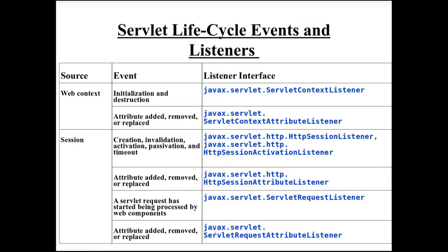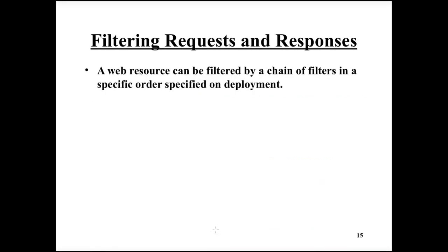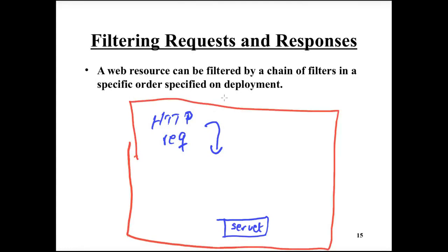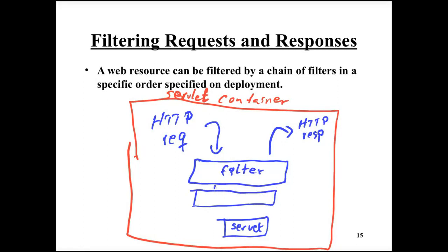There are many different servlet and application lifecycle events for which we can register listeners. It is also possible to define filters. An incoming HTTP request directed towards a servlet will pass through any number of filters on the way in, and the response will pass through those filters on the way out. These filters can do any handling of the request — write to logs, compress, or perform security checks, for example.